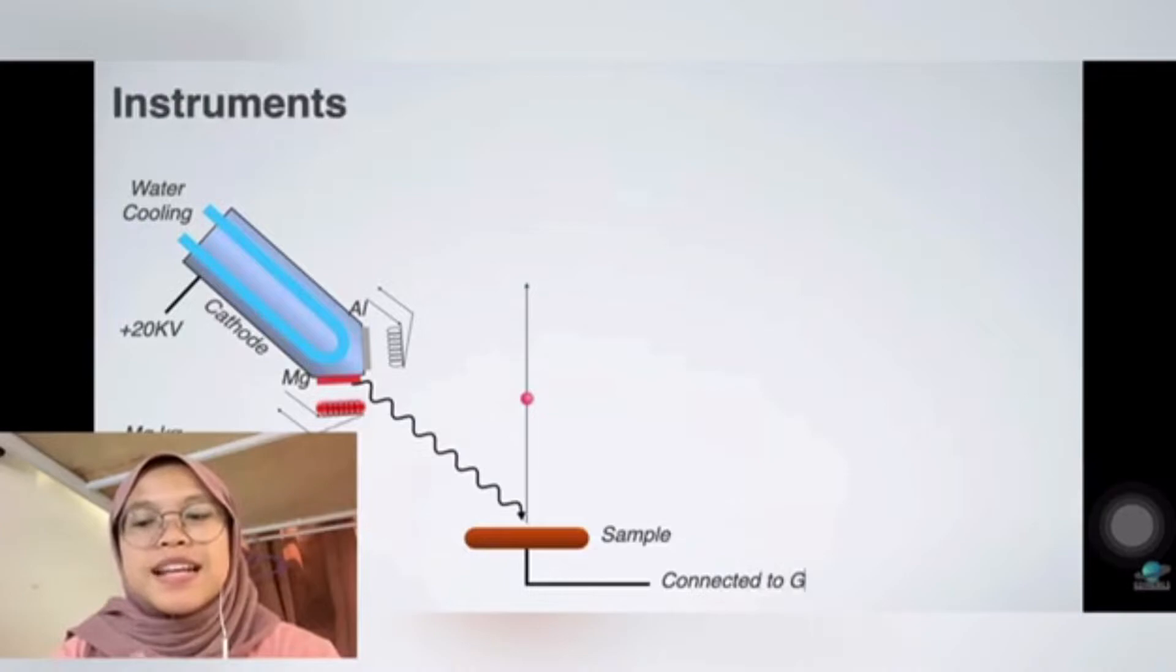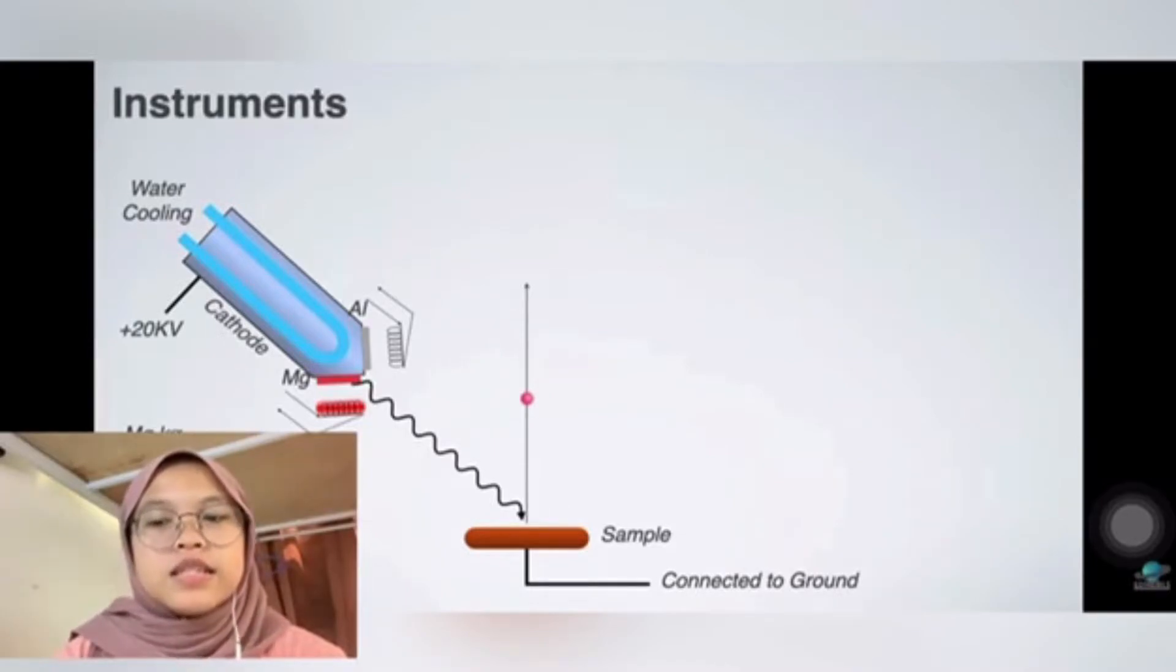Moving to the next one is the delencers. Delencers collect the emitted electrons which are focused on the entrance of the analyzer lens and slit system.